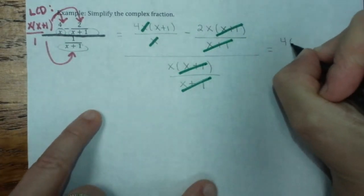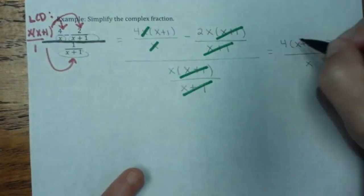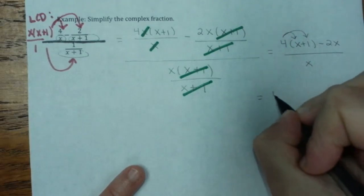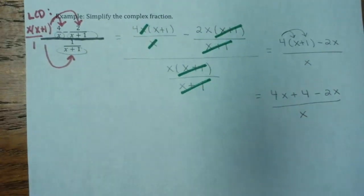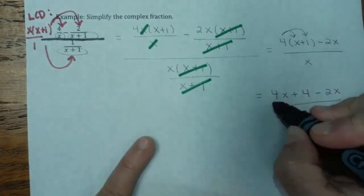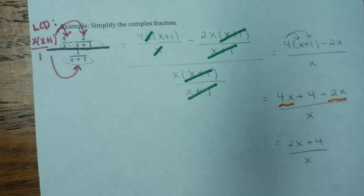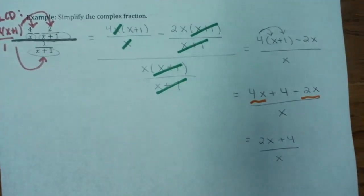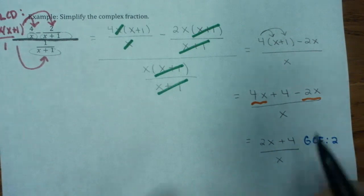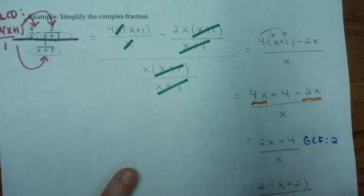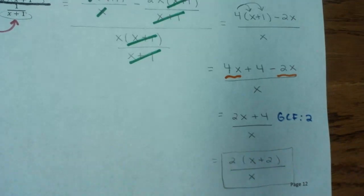We're left with 4 times x plus 1, minus 2x, all over x. Distributing the 4 up top: 4x plus 4, minus 2x. Combining like terms: 4x minus 2x gives us 2x, so 2x plus 4 over x. 2x plus 4 are not like terms but they have a GCF of 2. Factoring out that 2 gives us 2 times x plus 2, all over x. No factors can cancel, so our final answer is 2 times x plus 2, all over x.